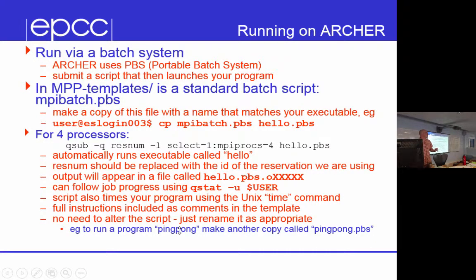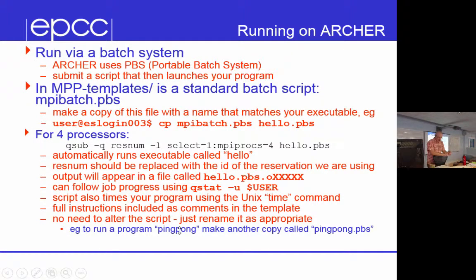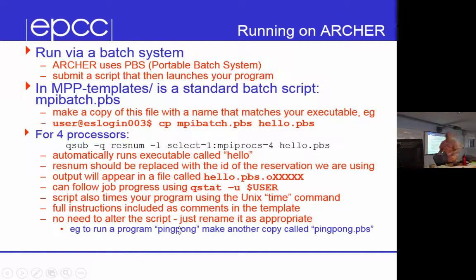What we're going to do, if there's no more questions — and you can just ask us when we're coming around if you have anything that wasn't clear — we're going to move on to exercise one on the message passing programming sheet, which is just to write a very simple Hello World program. It doesn't do anything other than print Hello World on the screen, but use the MPI_Init, MPI_Finalize, MPI_Comm_size, and MPI_Comm_rank routines, so you can work out what MPI process you are and how many are running, and just print that kind of stuff out.